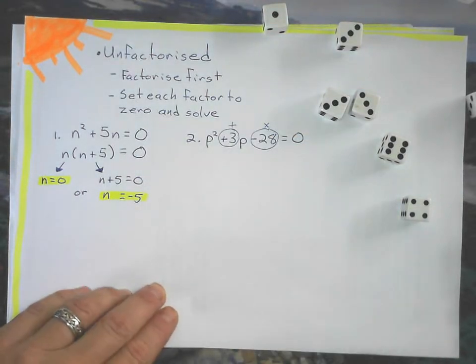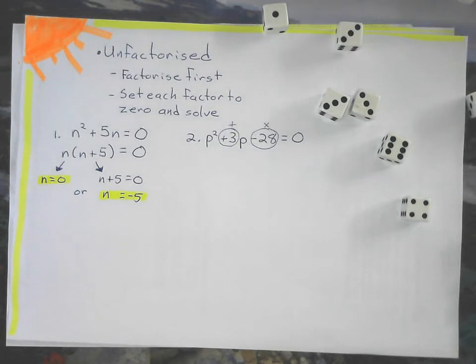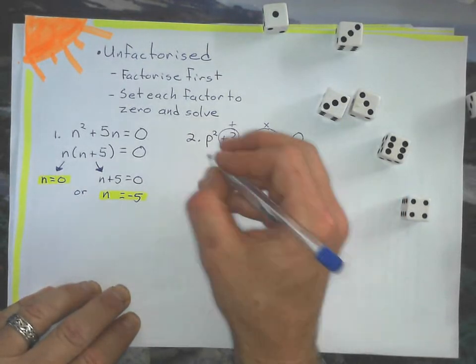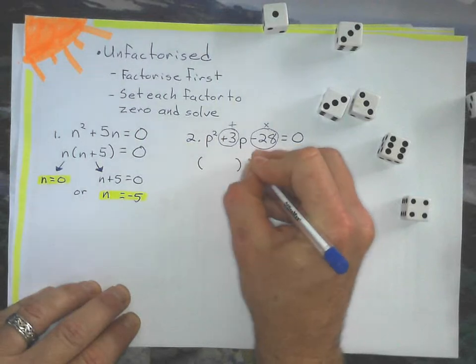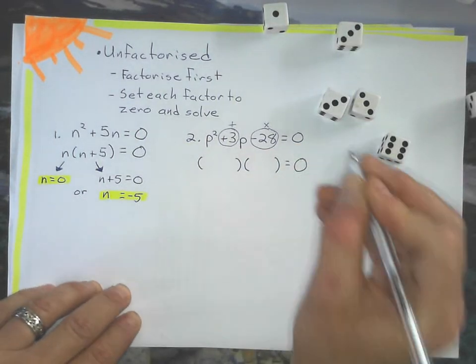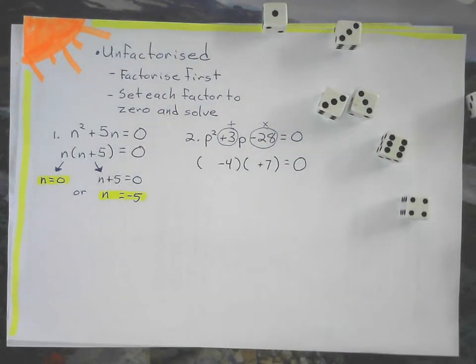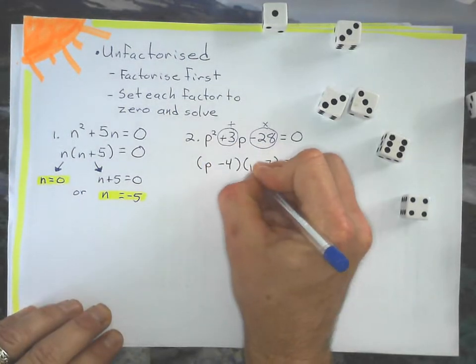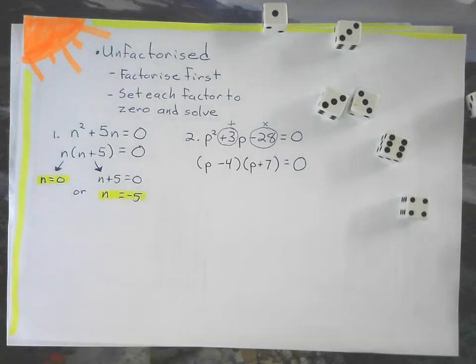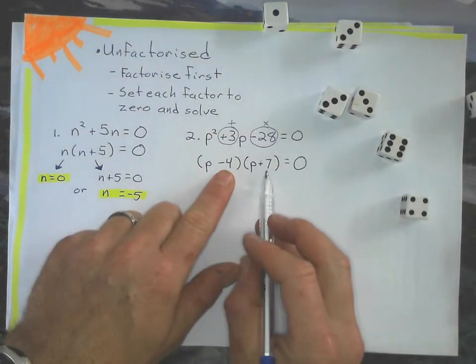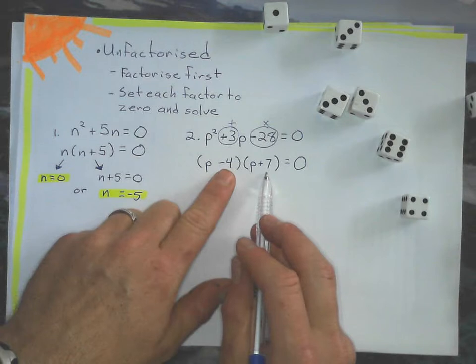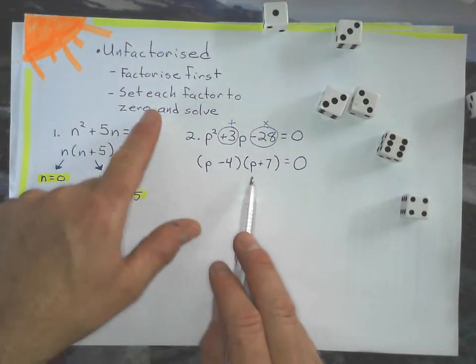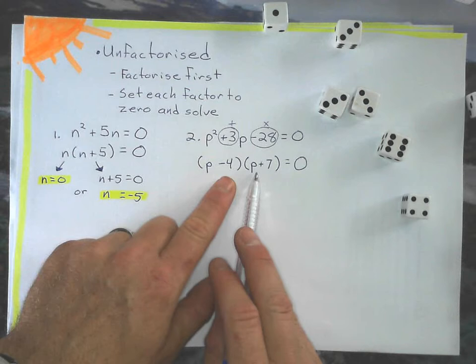And add to get positive 3 to help us out with factorizing it. Negative 4 plus 7 equals positive 3, and negative 4 times 7 gives me negative 28. Now, if you don't want to set each of those factors to zero, you don't necessarily have to, because they're quite easy to solve.